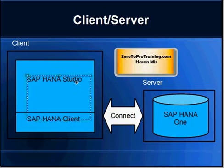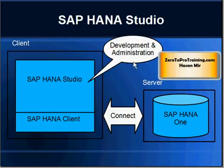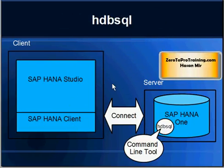On top of the SAP HANA client we have SAP HANA Studio running. Studio is used for two purposes: as a development tool and also for administration — we can control SAP HANA database through it. When SAP HANA One database is installed — in our case we rented a virtual machine from Amazon Web Services — along with the database you also get a tool called HDBSQL, which stands for HANA Database SQL. This is comparable to Oracle's SQL*Plus; it is a command-line tool that gives you access to SAP HANA One database.